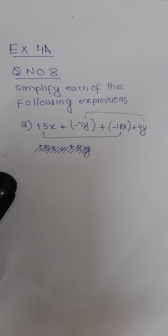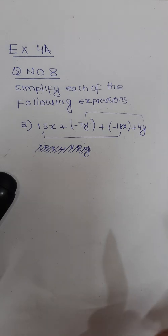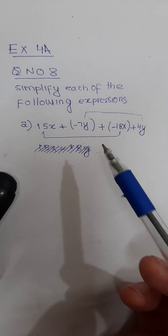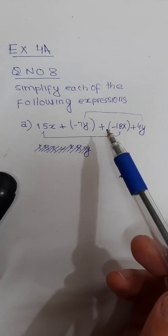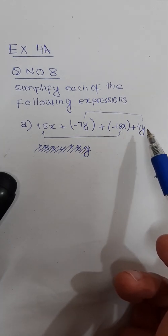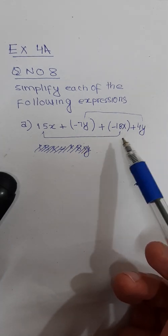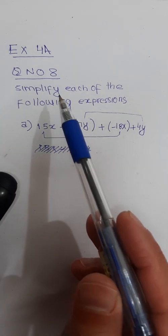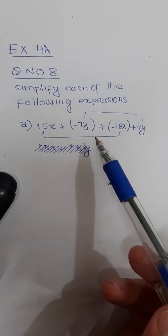Hello everyone, this is Umair Hassan. In this video I am going to solve question number 8 from exercise 4a of D1 7th edition. Question number 8 part a is 15x minus 7y minus 18x plus 4y. You have to simplify this expression.